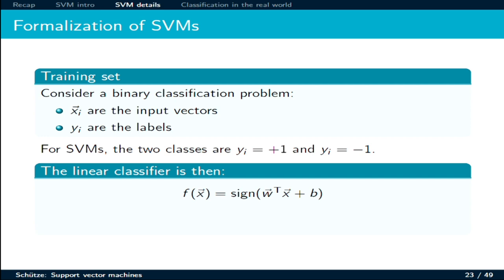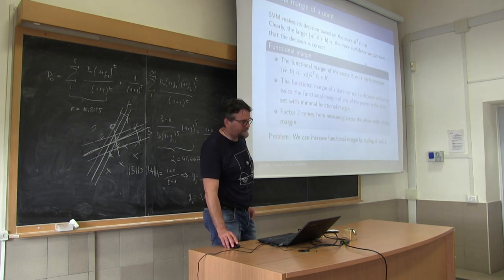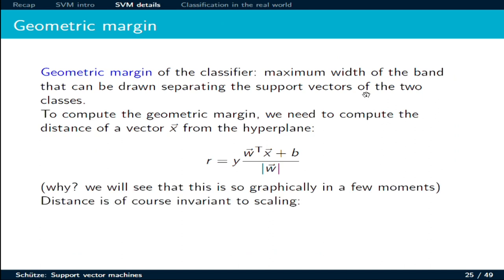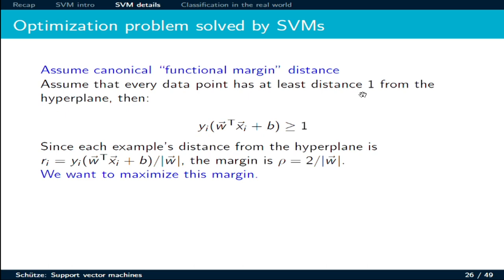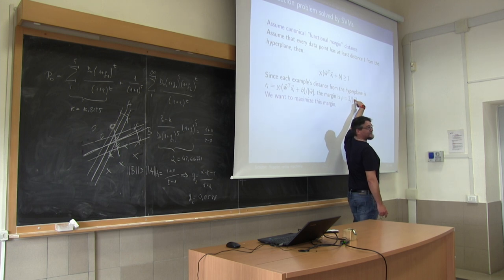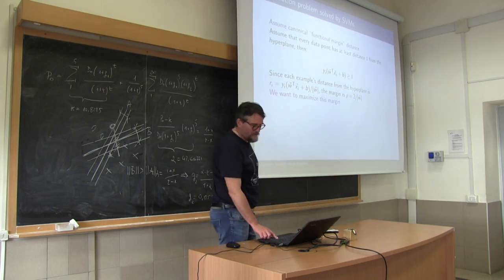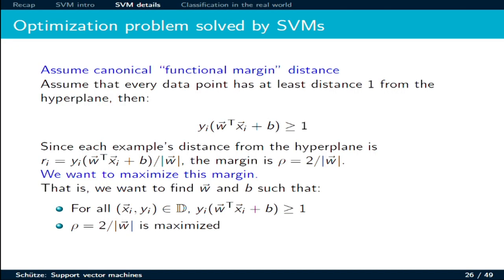So basically, I am seeing whether I am above or below a given plane, a given line. This is the more formal proof but the same idea. You see here: this is the distance, y is twice because you have positive and negative distance. You want to maximize this distance, which means you want to minimize w.